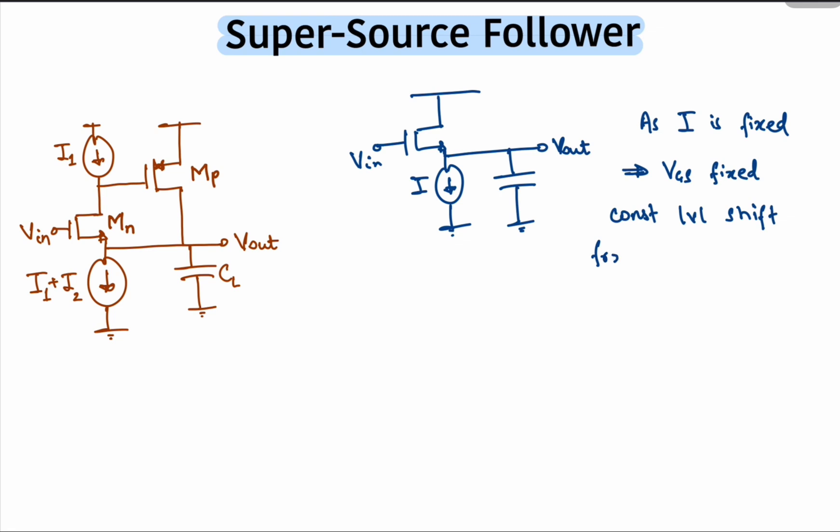By the way, note that we have an intrinsic negative feedback in this topology. For instance, if the output voltage decreases, the Vgs would momentarily increase and thus the NMOS would drive current into the output node to restore its value.